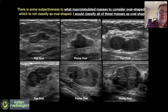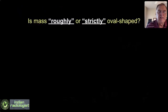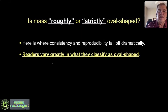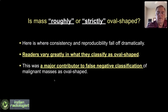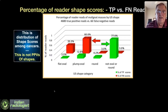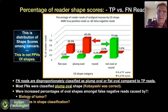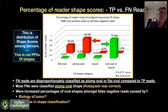Is this a problem? I don't think so. What's really important is whether a mass is roughly or strictly oval-shaped — and here's where consistency and reproducibility fell off dramatically. Readers varied greatly in what they would classify as oval-shaped, and this was a major contributor to false negative classifications. Triple negatives, mucinous carcinomas, and papillary carcinomas in particular can be oval-shaped and circumscribed.